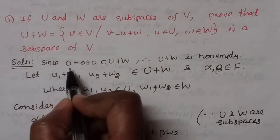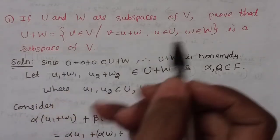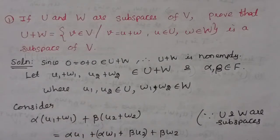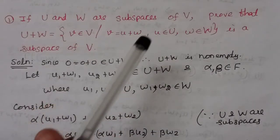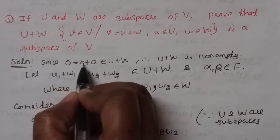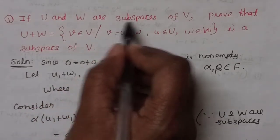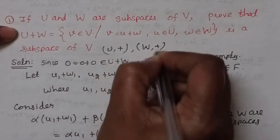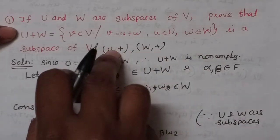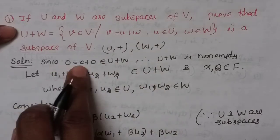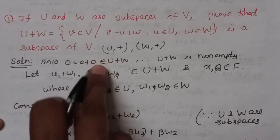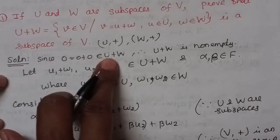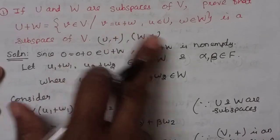Since 0 is the additive identity of the vector space V, and U and W are subspaces of V, 0 belongs to both U and W. So 0 can be written as 0 plus 0, which means 0 belongs to U plus W. Therefore, the addition of subspaces is non-empty.